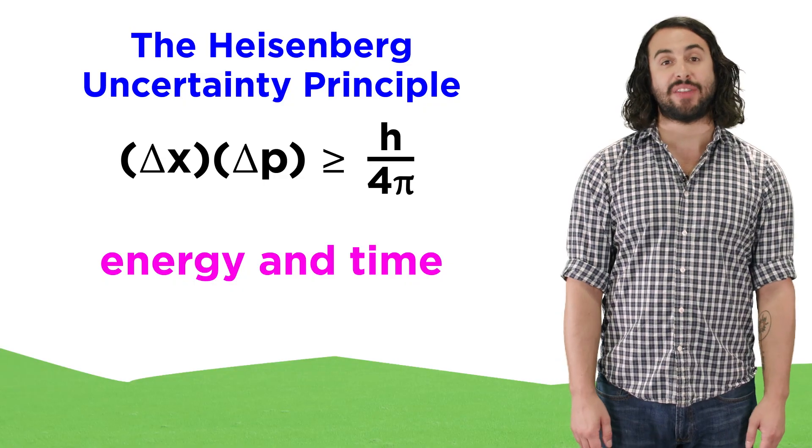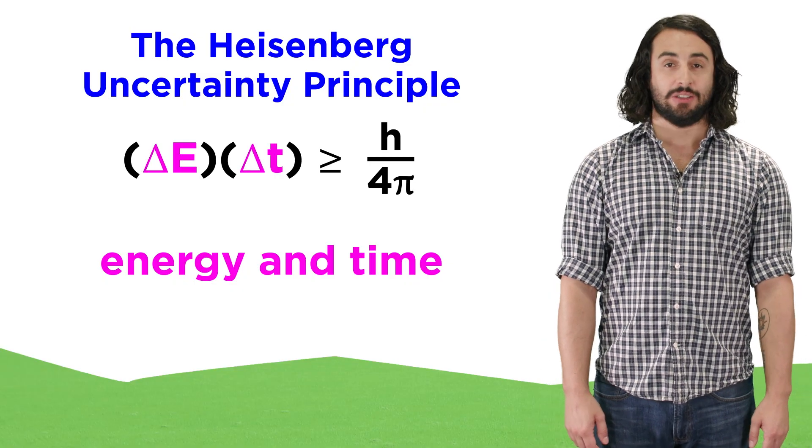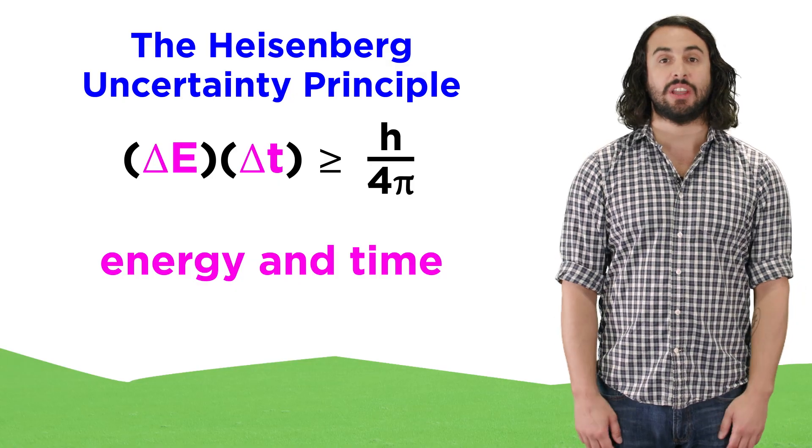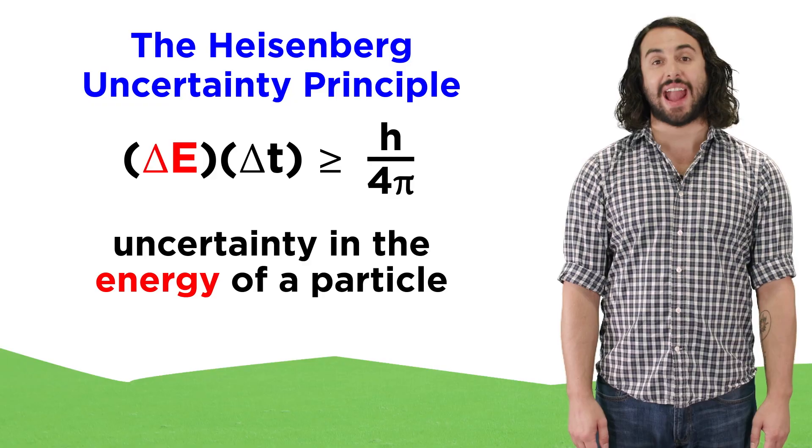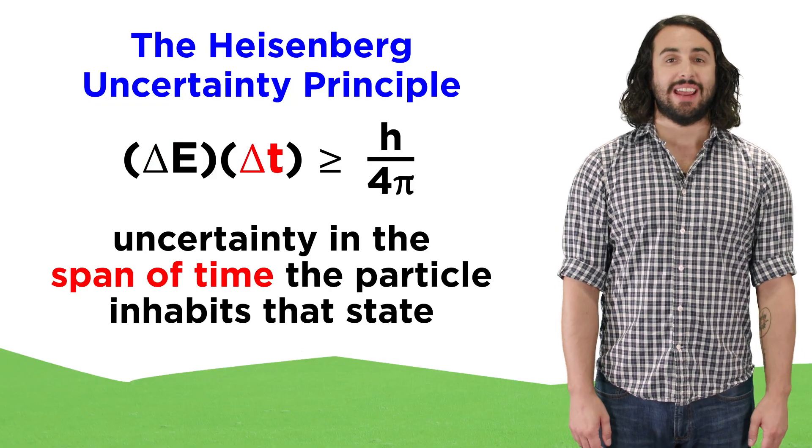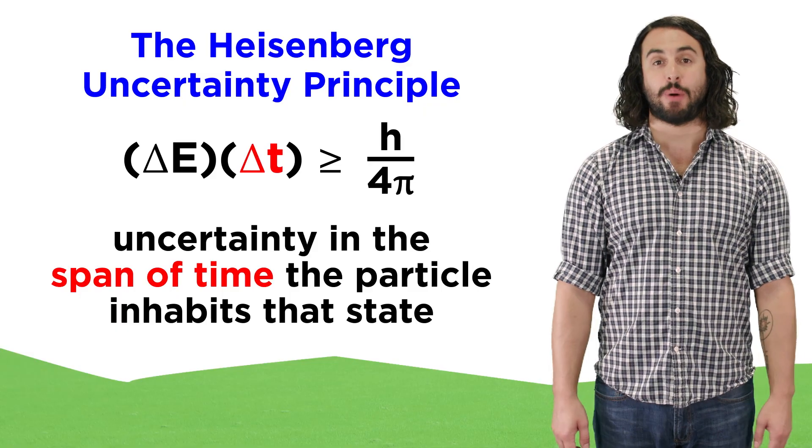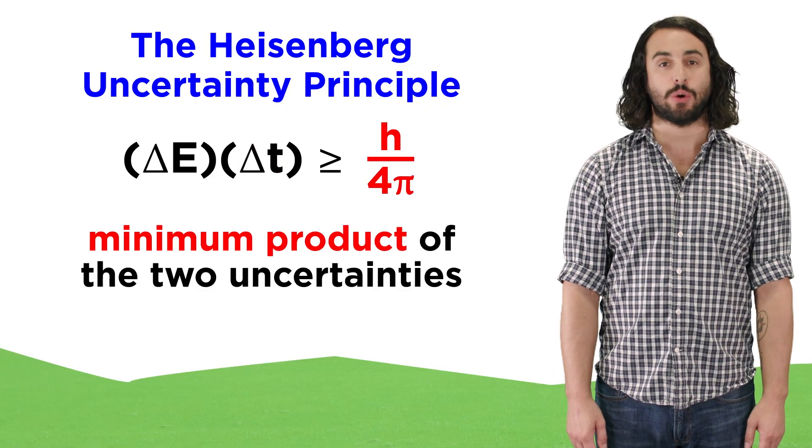We can restate the principle mathematically just as we did before, but instead of X and P, let's put E and T, leaving the rest the same. What this says now is that the uncertainty in the energy of a particle in a certain state times the uncertainty in the interval of time that the particle inhabits that state is greater than or equal to h over 4π.